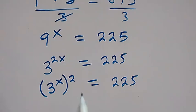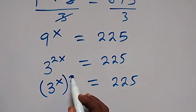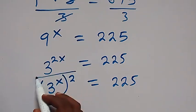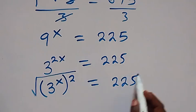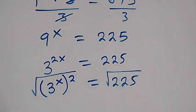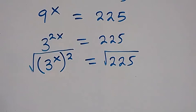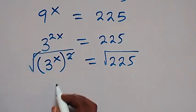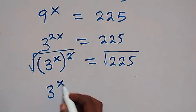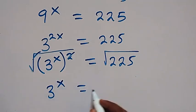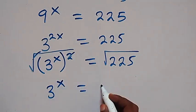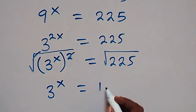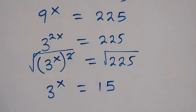From here we can take the square root on both sides so as to remove the square. The square root and square cancel, leaving 3 raised to the power x, which equals 15.